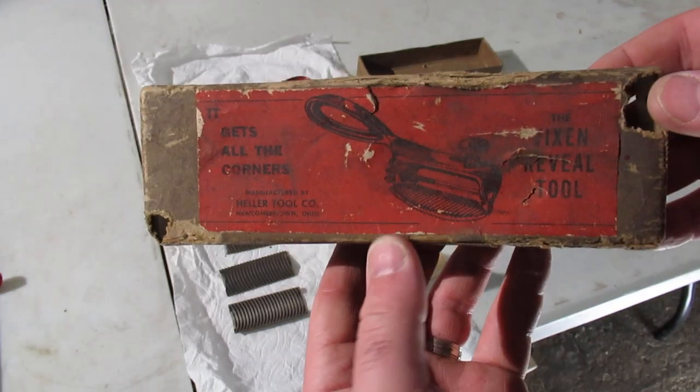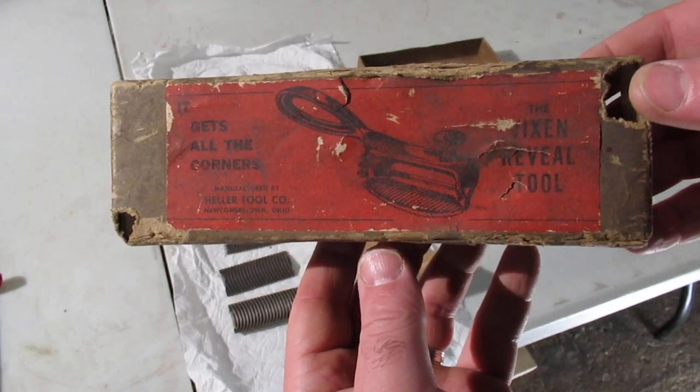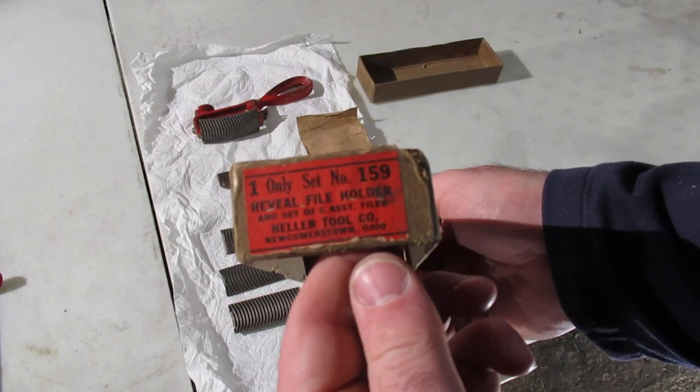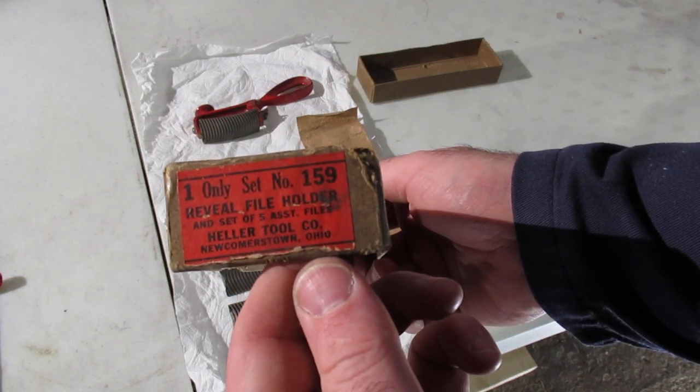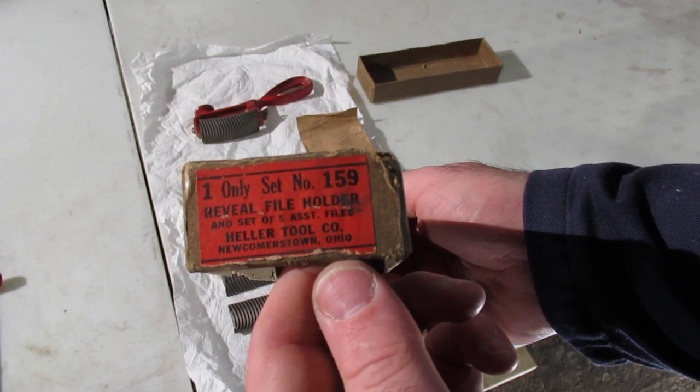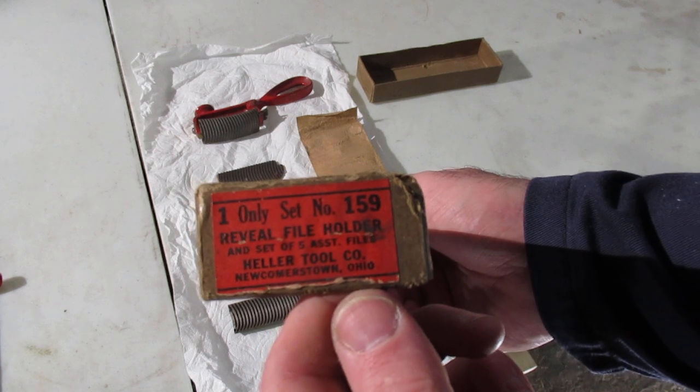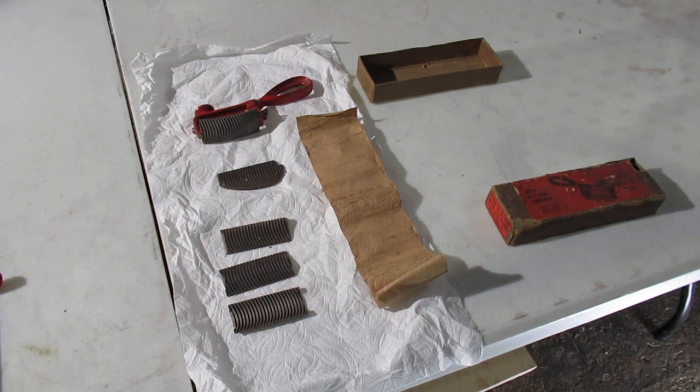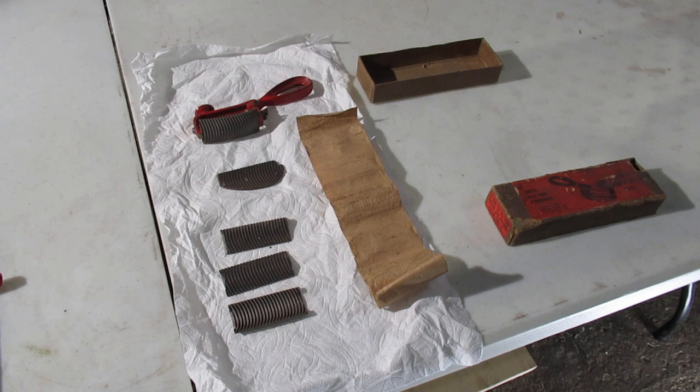So there's the original packaging here. You see on the end there, it's a set number 159. I'll include a link to all of the sub parts that go in this kit. So it's from Heller. I think some of the other companies resold this but it would have come as a Heller.